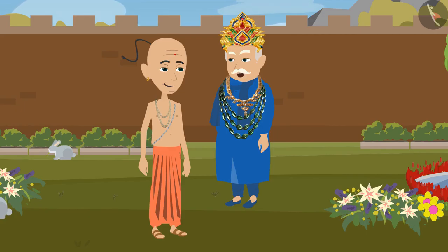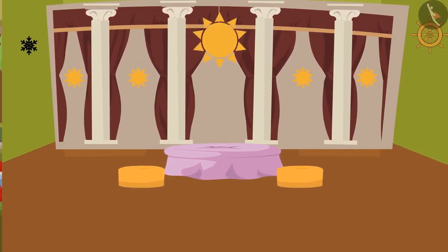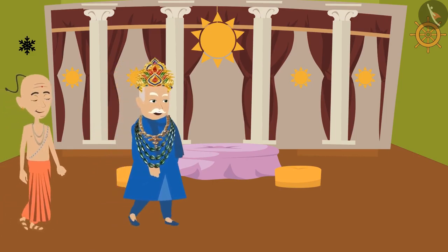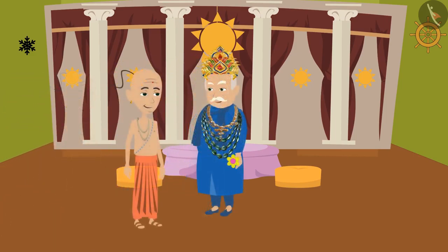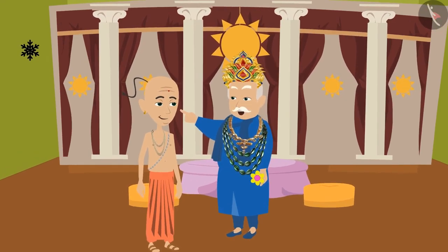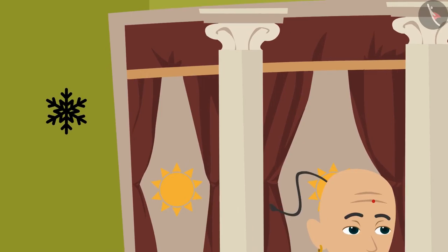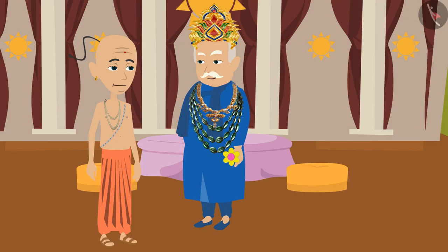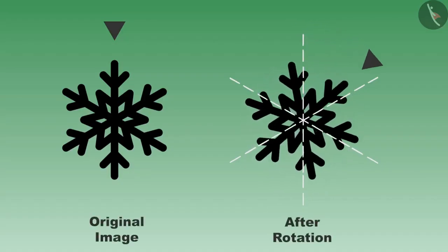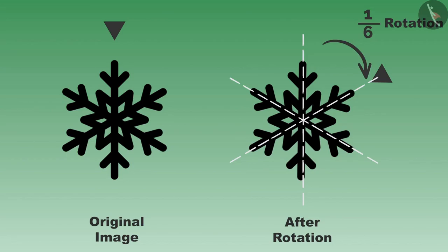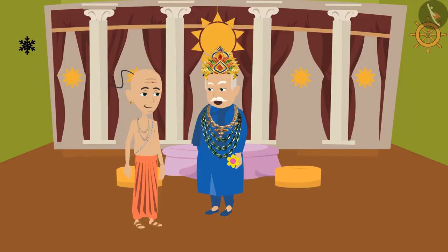Oh, this flower is beautiful! Let us take this back to the palace with us. Both of them left for the palace. Once they reached the palace, the king saw an image hanging on the wall. After pointing towards the image he said: Tenali Rama, I think this image will also remain the same after one-sixth rotation. Sir, I also feel the same — let us rotate it and see. Tenali Rama rotated it. Oh yes, this image is also the same even after one-sixth rotation!